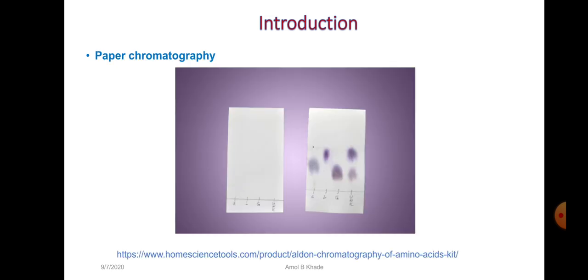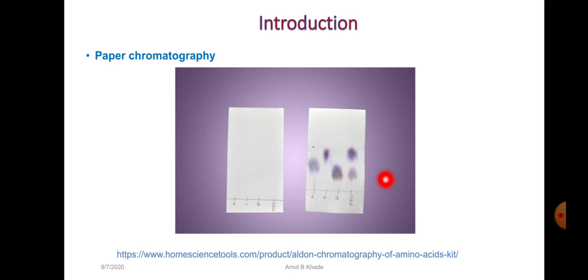As we know, we have studied the very primitive technique of chromatography — paper chromatography — where we use Whatman filter paper and spot our samples. We can spot amino acids, develop the paper using a suitable solvent system, and then by detecting the spots with chemical reagents like ninhydrin, we could identify the compounds by comparing the RF value.